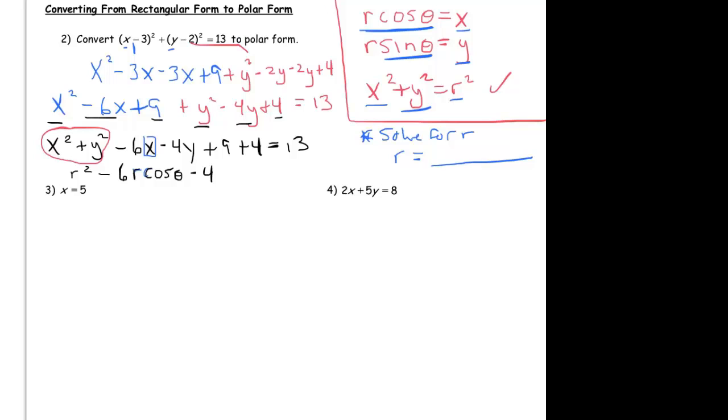And y minus 2 squared would be y squared minus 2y minus 2y plus 4, which reduces to y squared minus 4y plus 4, and of course that all equals 13.